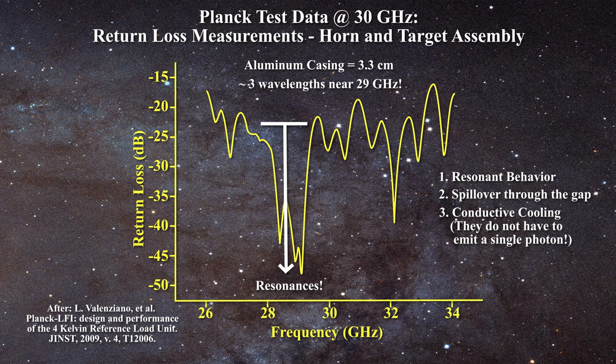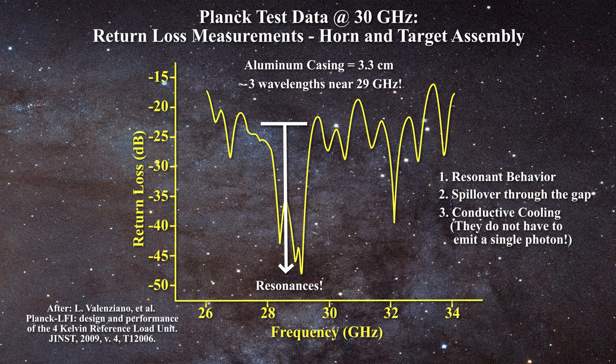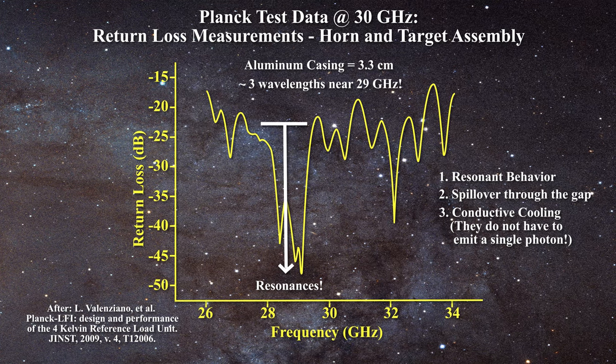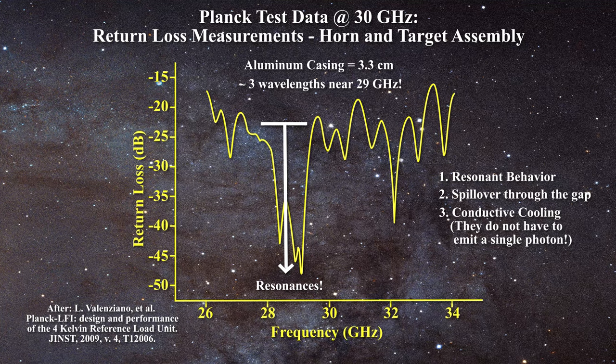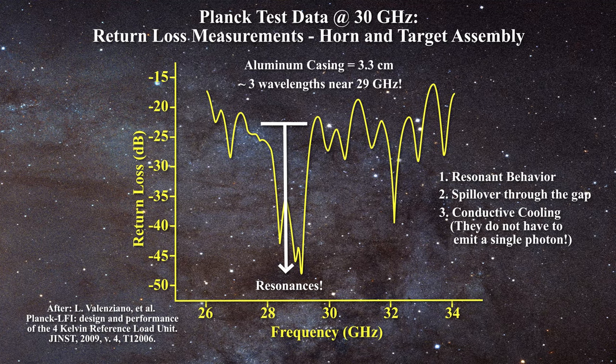Given such poor blackbody design, the Planck team should definitely temper their claims at 30, 44 and 70 GHz. In reality, they have no idea what they are sampling, because fundamental flaws exist in their instrument design.